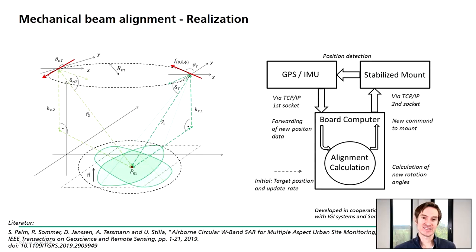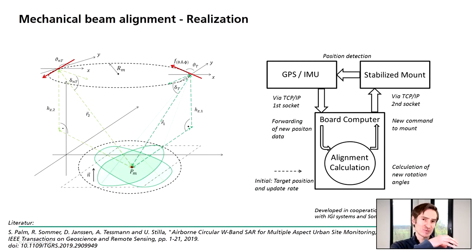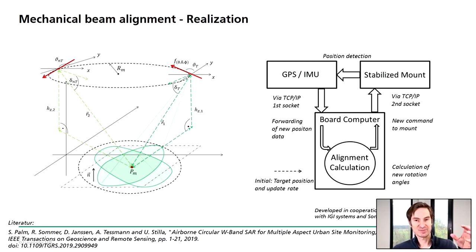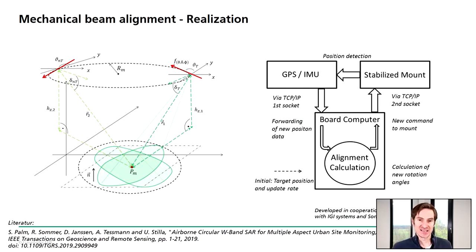To realize the beam stabilization, we basically installed our radar front end in a mechanical mount — a gimbal system. We then developed a software framework where we extract, in real time, our GPS IMU data, calculate the best solution for the mount, and give commands back to the mount to stabilize the antennas. The beam is then fixed on a certain GPS coordinate so that we can collect the data.